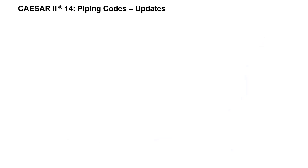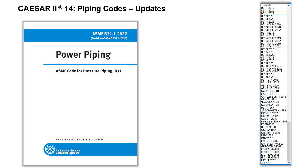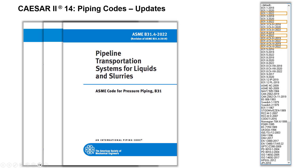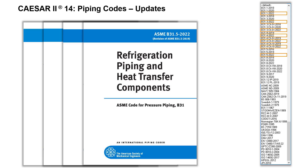In CAESAR 2.14, the following piping codes were updated to the latest edition: ASME B31.1 2022 Edition Power Piping; ASME B31.3 2022 Edition Process Piping, which consists of two parts — the B31.3 Main Body and Chapter 9 High Pressure Piping; ASME B31.4 2022 Edition Pipeline Transportation Systems for Liquids and Slurries; and ASME B31.5 2022 Edition Refrigeration Piping and Heat Transfer Components.